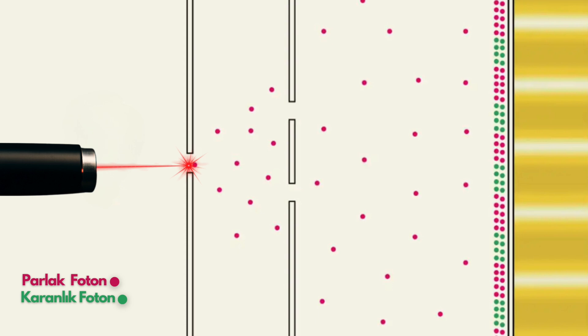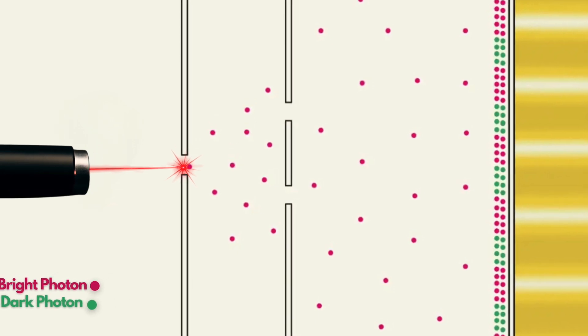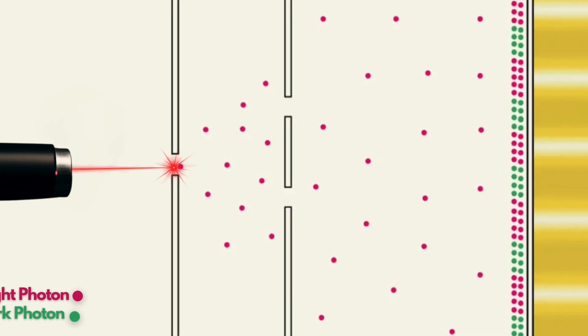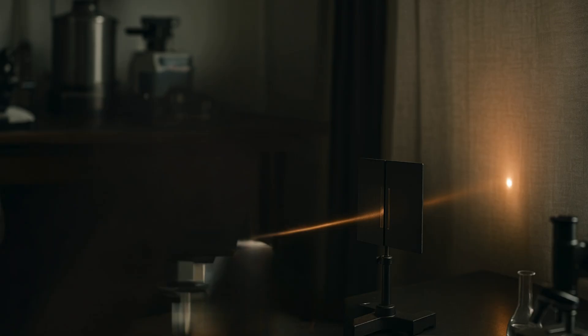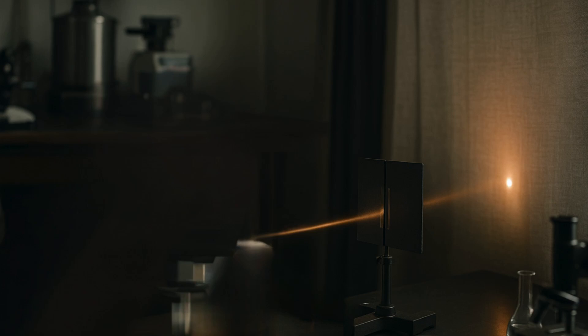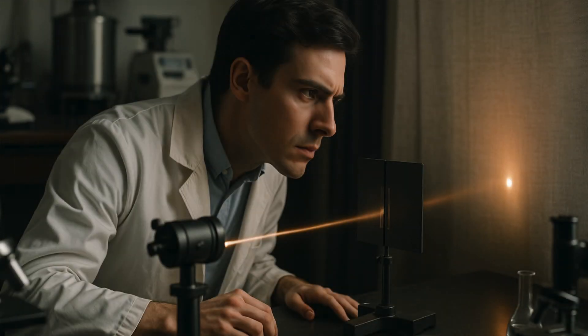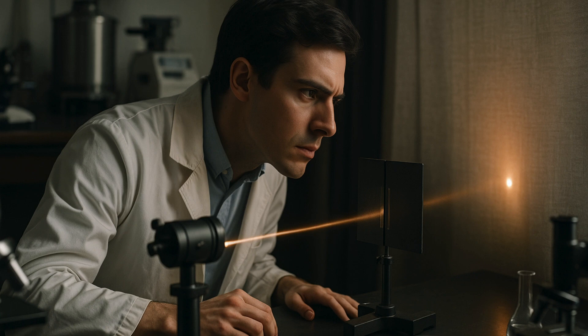When we apply this interpretation to the double-slit experiment, the picture becomes clearer. If there is no observer present, meaning the photons have not interacted directly with any detector, atom, or matter, then it's impossible to determine which slit they pass through.